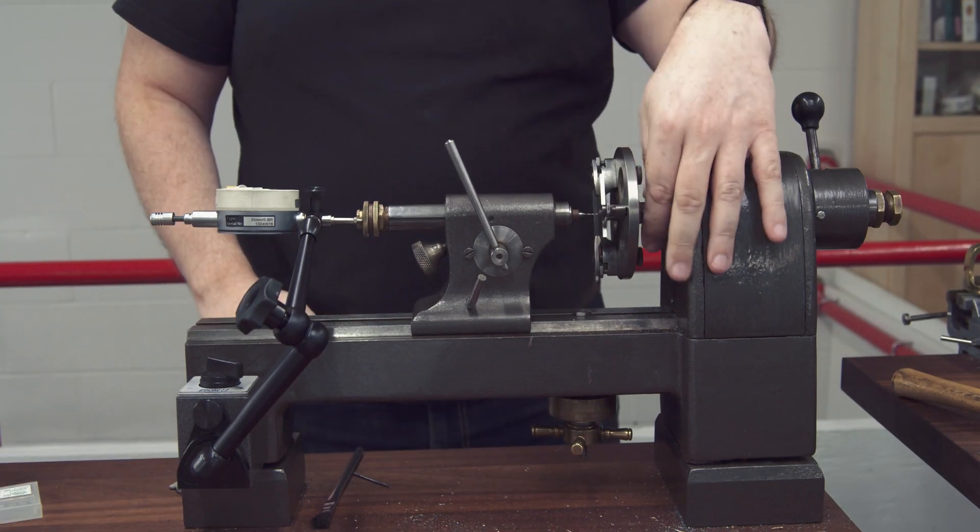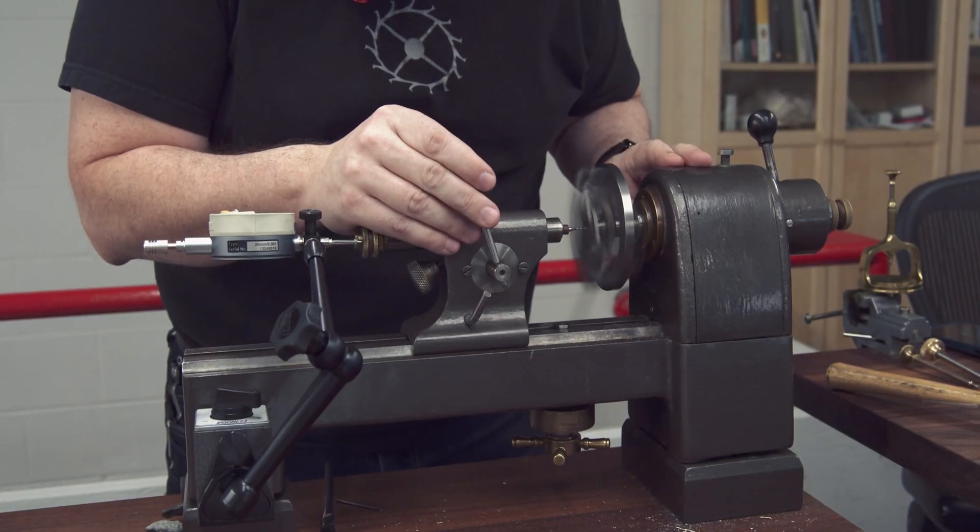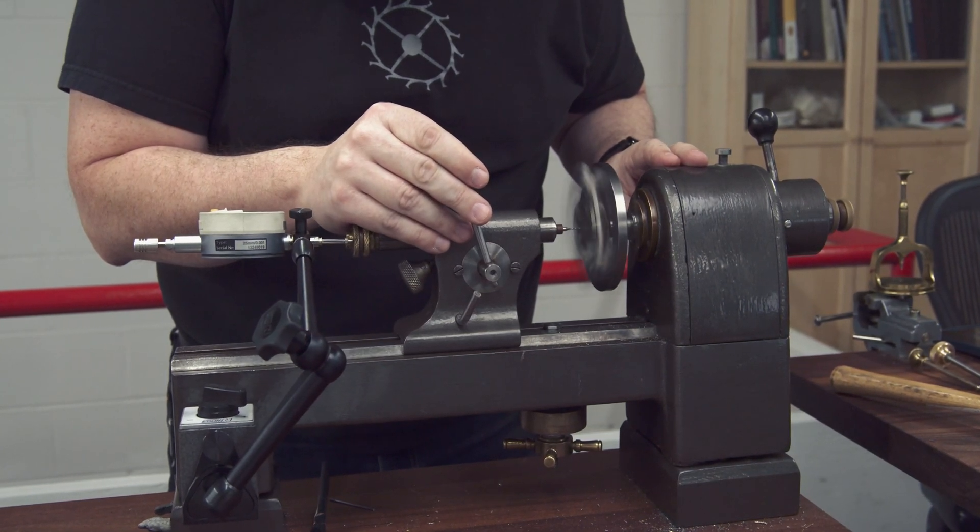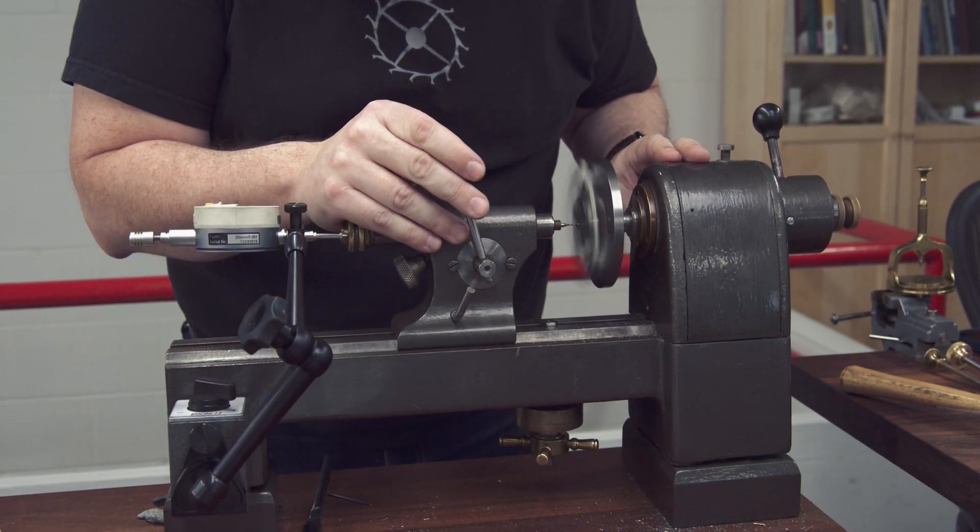Anytime you've set up a new part on the lathe it is important to give the whole part and setup a turn by hand once or twice just to ensure that everything is locked down and that nothing is going to run into your part as it starts turning.